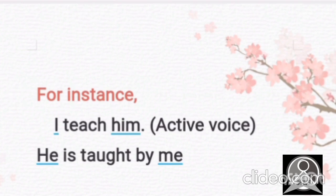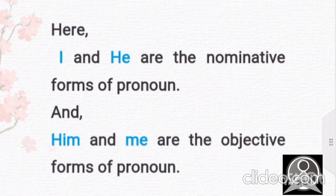Here I is the subjective form or we can say nominative one, and him is the objective form. And him is followed by the verb. And I is before the verb. So we all have to know this, whether that is the active or the passive voice. As the second one says, he is taught by me. Again, the me is followed by the verb and he is before the verb. I hope I'm clear here. I and he are the nominative forms of pronoun and him and me are the objective one.